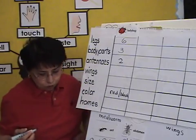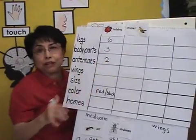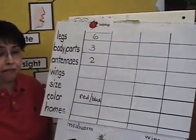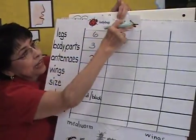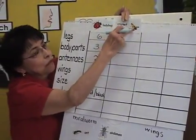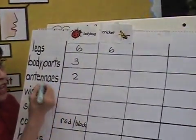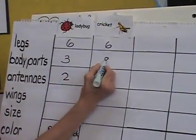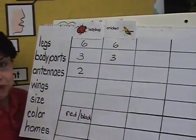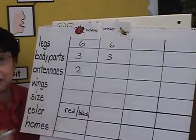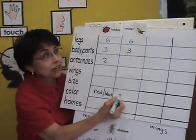Now, what about a cricket? Who has the cricket? Probably three or four children, depending on how many children you have, will get the cricket. Whoever has the cricket, I want you to tell me: how many legs does a cricket have? Six. How many body parts does the cricket have? Three. You continue, and then: what color? Maybe some of them may have a green one, some may have a brown one. So let's write the color here.